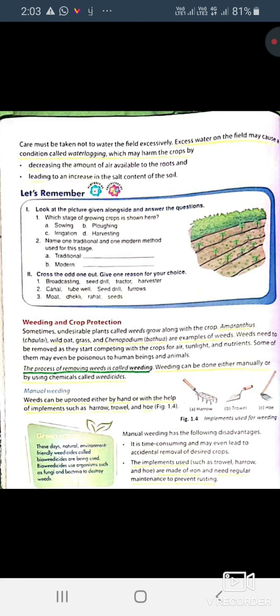These are the examples of weeding and crop production. The process for removing weeds is known as weeding. This process can be done both manually or with the help of chemicals. First is manual weeding.